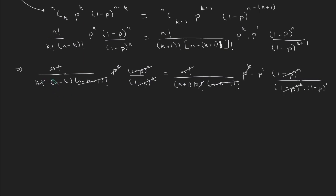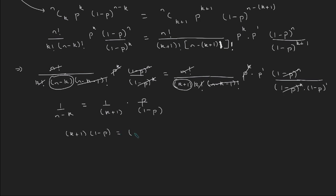After cancellation, on the left-hand side I am only left with 1 divided by N minus K in the denominator. On the right-hand side, I am left with 1 divided by K plus 1, multiplied by P divided by 1 minus P. Cross-multiplying gives K plus 1 multiplied by 1 minus P equals N minus K multiplied by P.